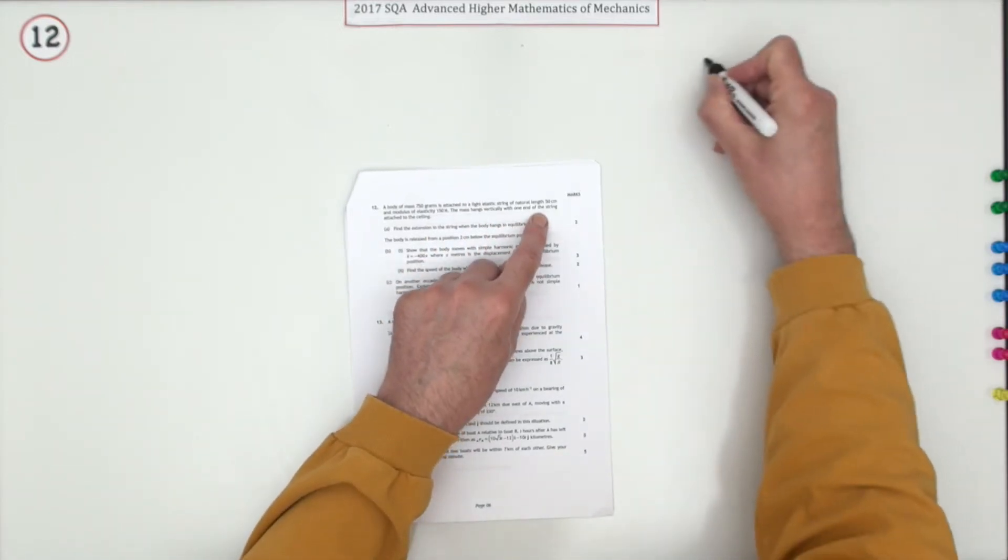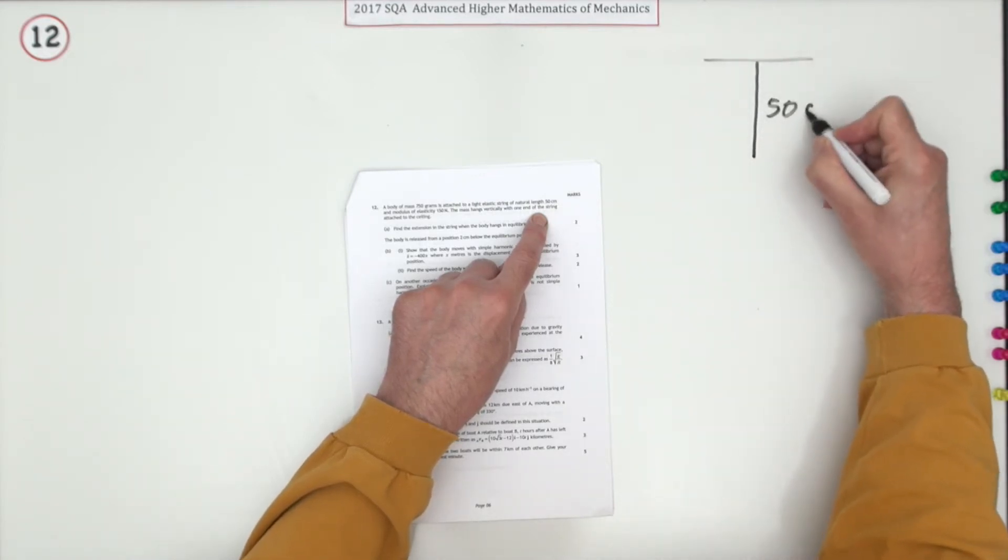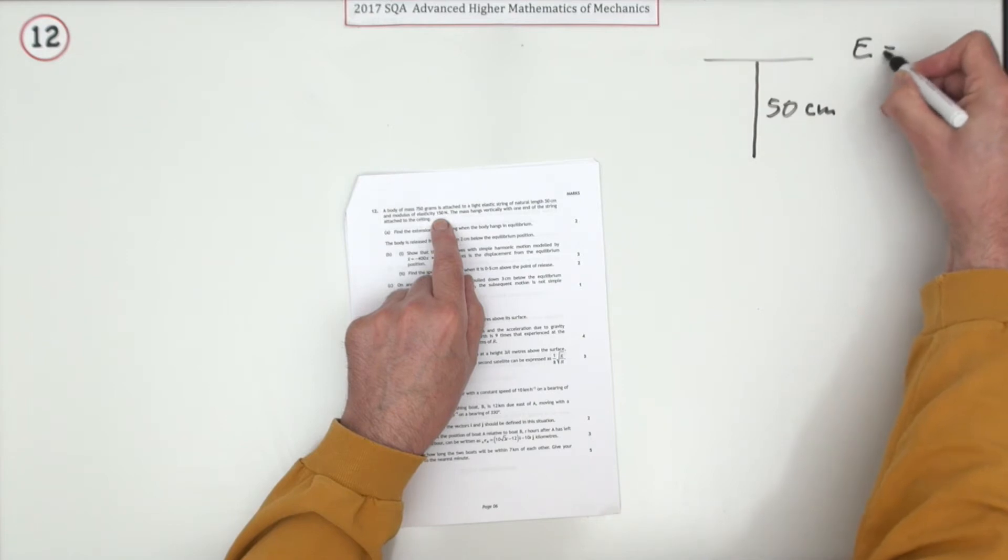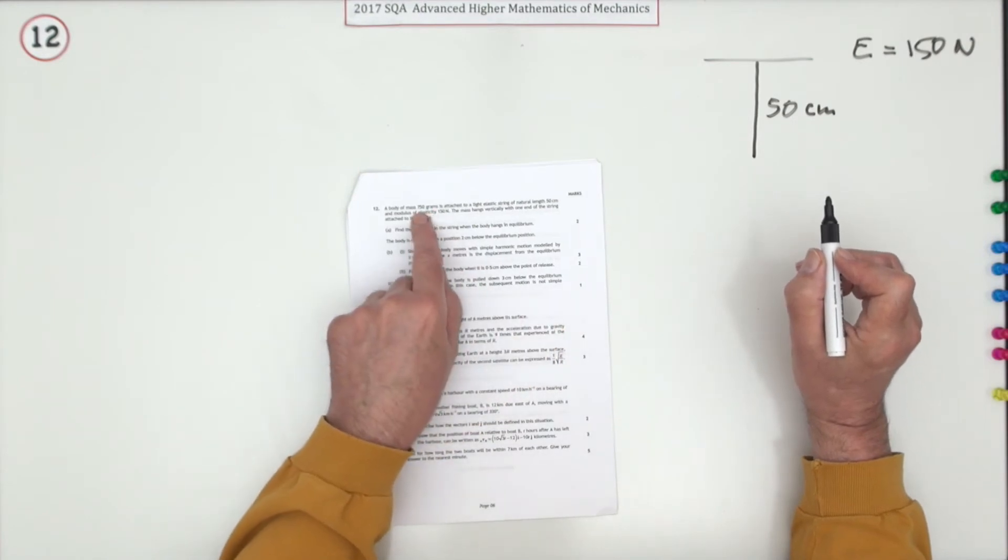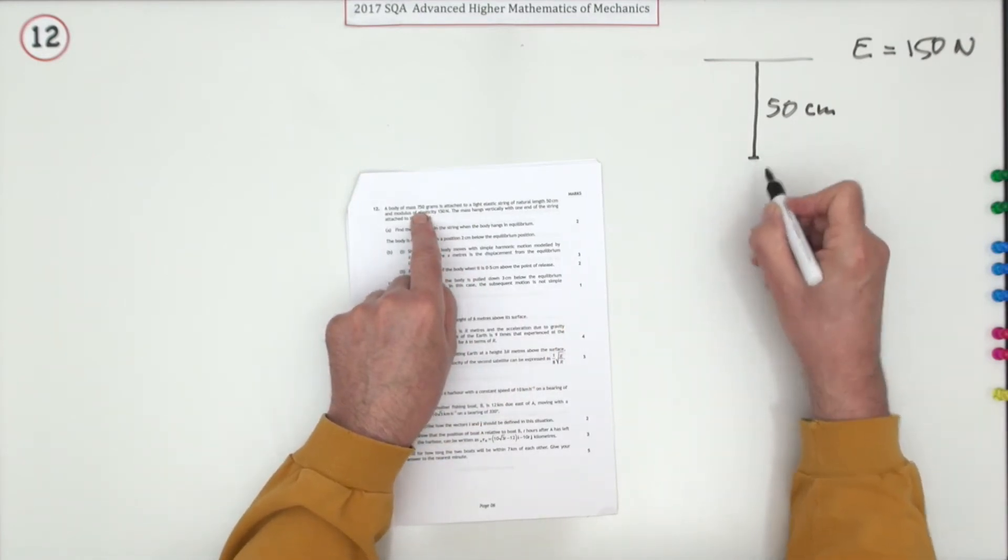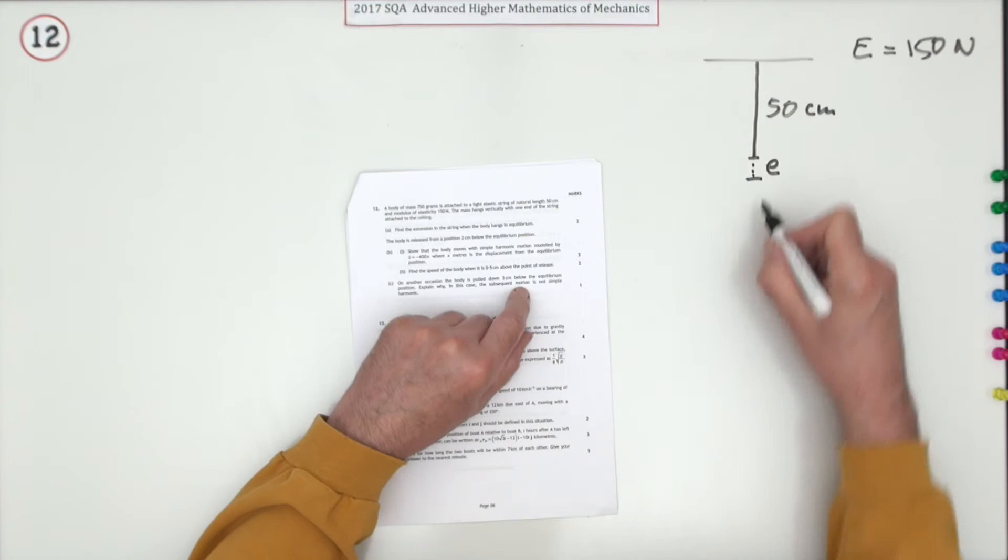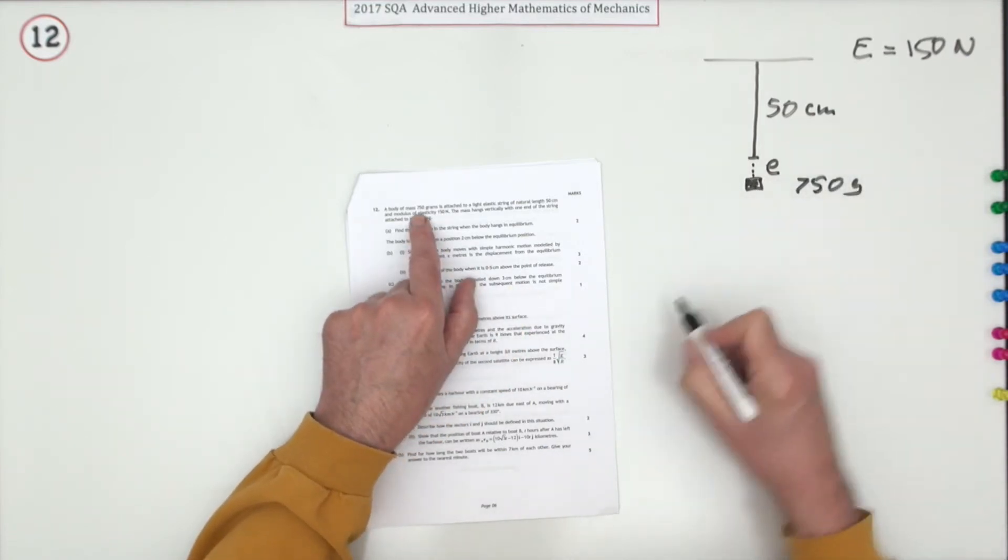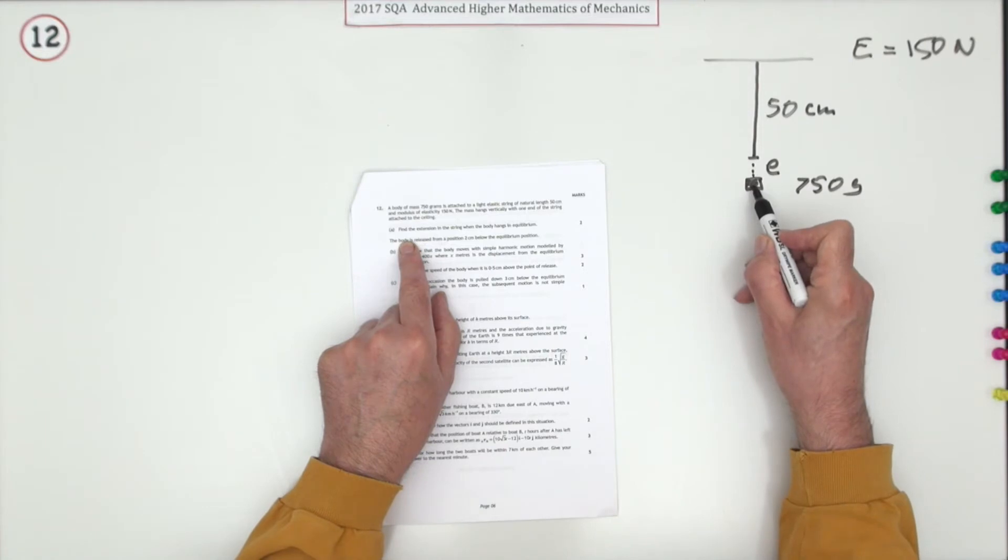It hangs vertically from the ceiling, so let's just model this. Here's the string of natural length - that means not under tension - 50 centimeters. Its modulus of elasticity is 150 newtons. The body's got a mass of 750 grams. When you put it on, this is going to extend by a certain amount until it reaches equilibrium. Part A is find this extension once it hangs in equilibrium, for two marks.